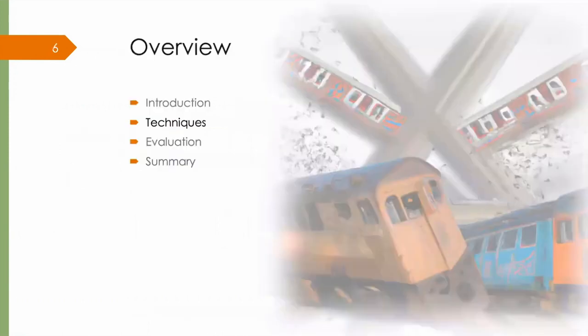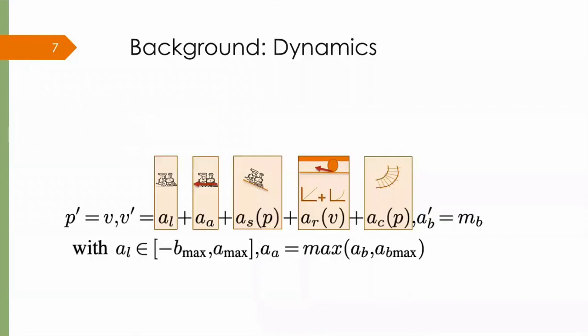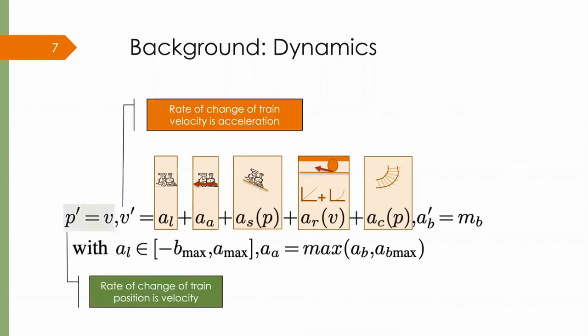I will now talk about some of the techniques that we used in the paper. But before that, let me quickly introduce you to the train dynamics. Train position P changes as velocity V. Train velocity V changes as acceleration, which has several components.